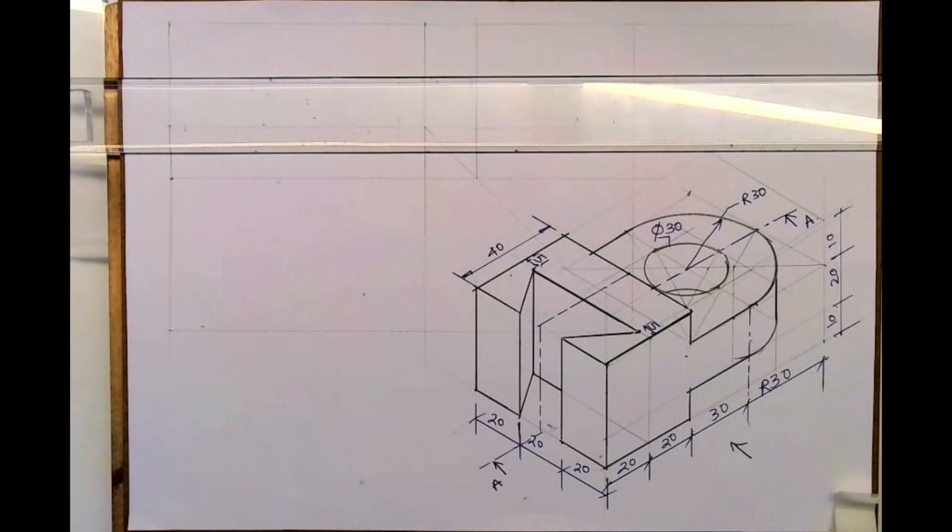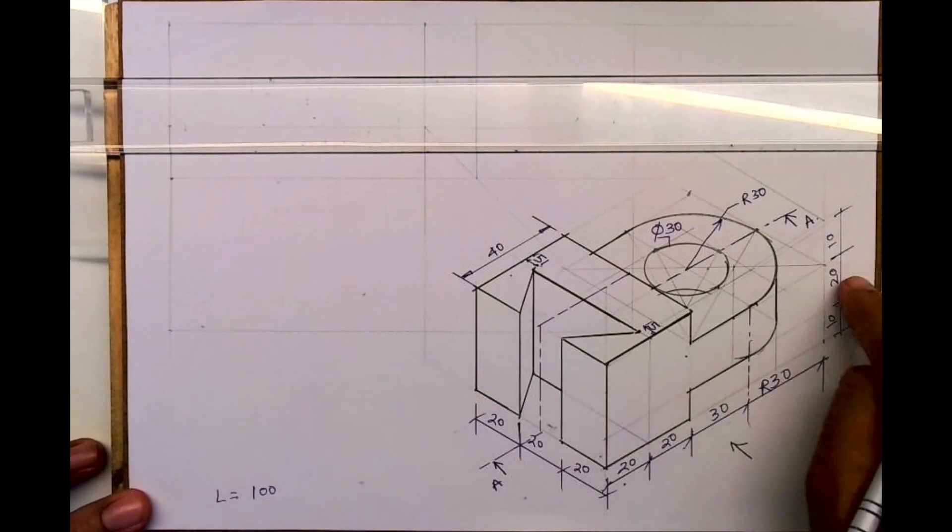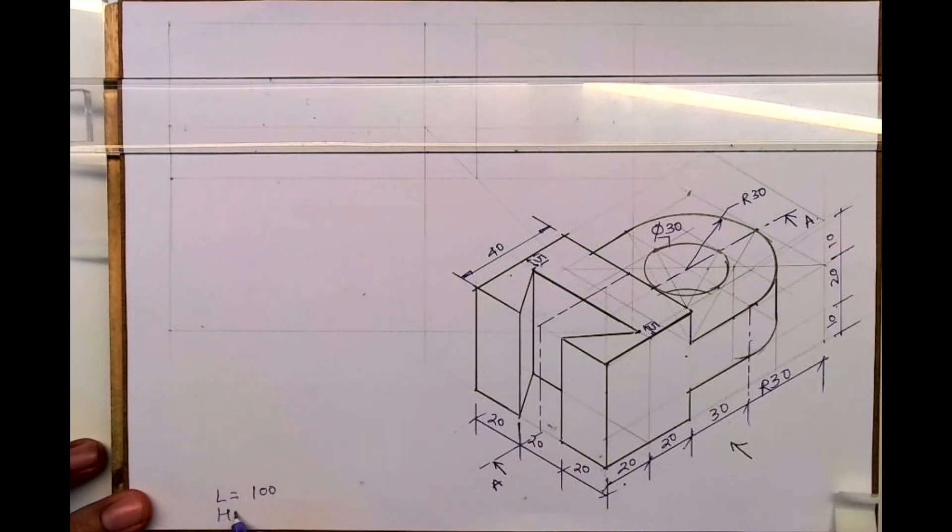Welcome to technical drawing. Today we'll see sectional orthography. Length is 100, see length is 20, 40, 30, 30, 60, so it's 100 width. Height is 40, 10, 20, 10 and width is 60, 20, 20, 20.